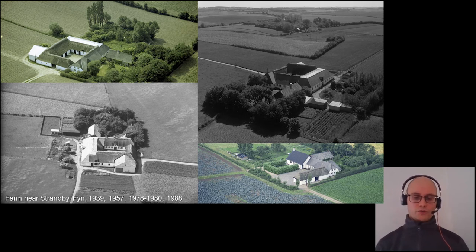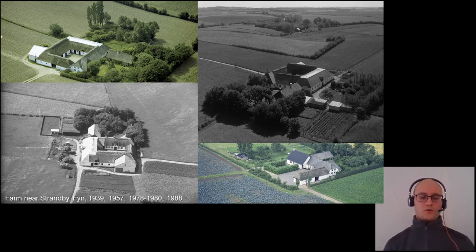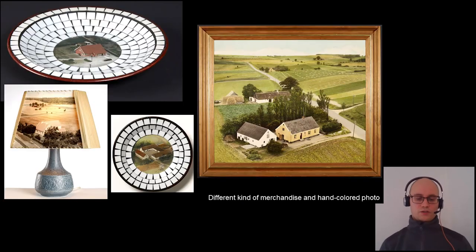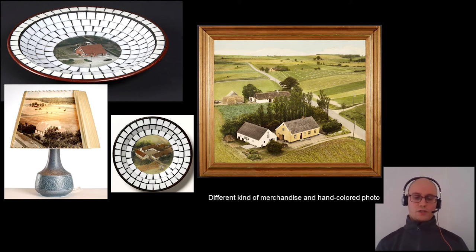In the 1930s, aerial photo companies started to record images of farms and houses in rural Denmark. Between 1930 and 1990, most Danish farms were recorded three to four times or more, as illustrated with this farm from Fyn. Aerial images soon became an integrated part of rural culture, and during the period from the late 1930s to early 1960s, most Danish farms of a certain standard acquired aerial photos of the property.